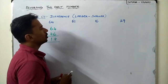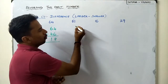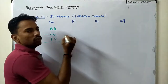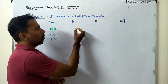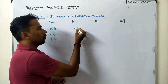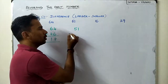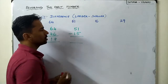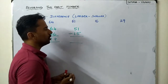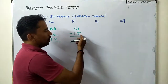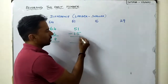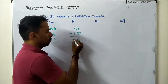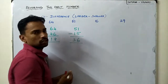Next we have 51. If we reverse 51, we get 15. So we do 51 minus 15. Working through the subtraction: 1 minus 5 requires borrowing, giving 6 in the ones place, and 4 in the tens place. So the answer is 36.